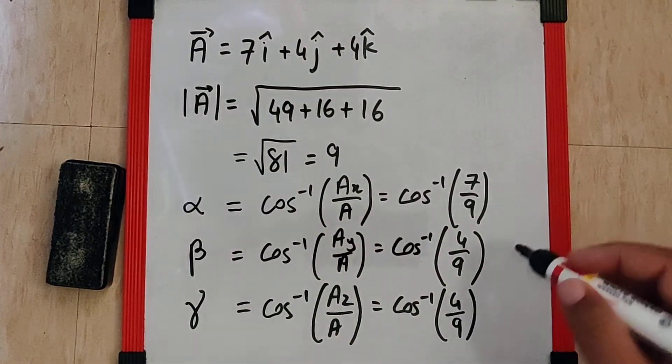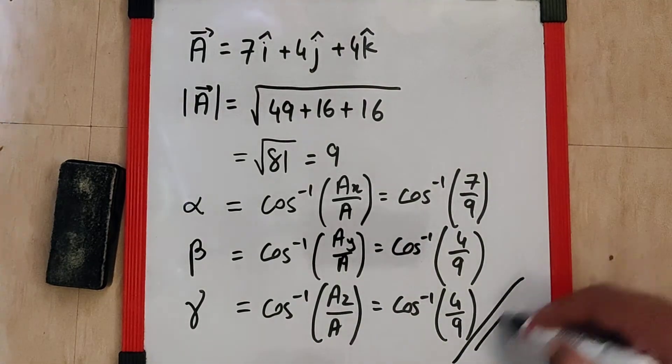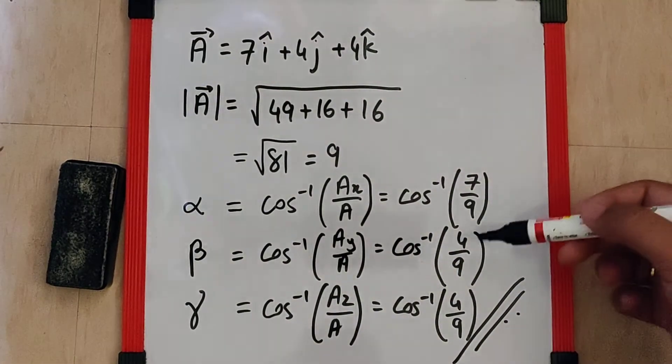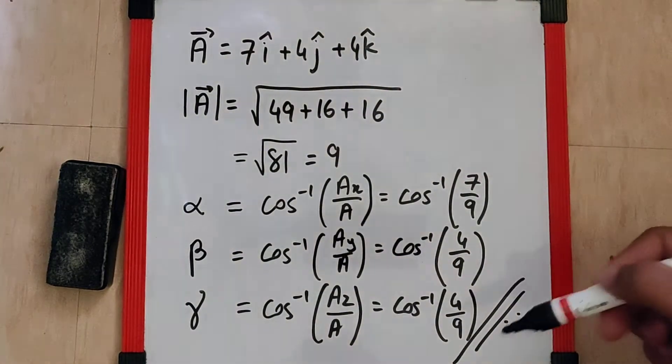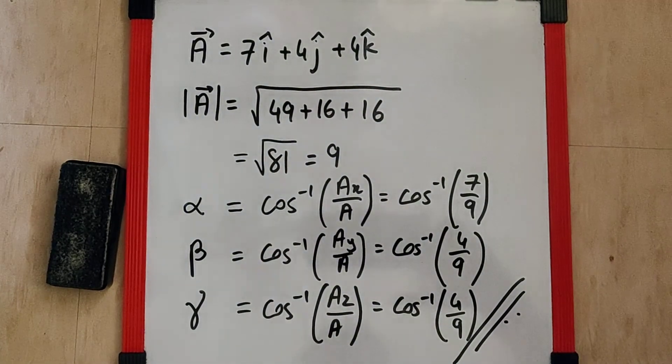So the three angles which they are asking for is cos inverse of 7 by 9, cos inverse of 4 by 9, and cos inverse of 4 by 9, which is the final answer.